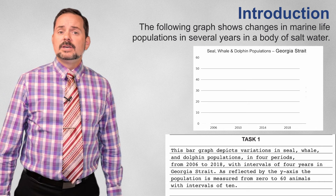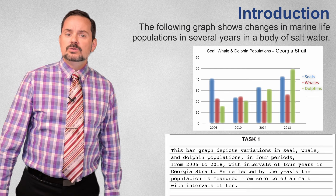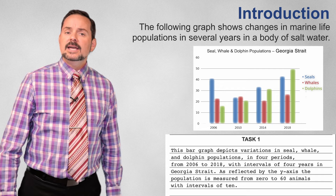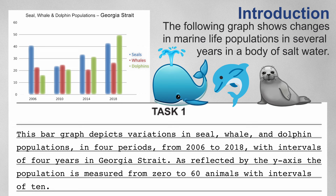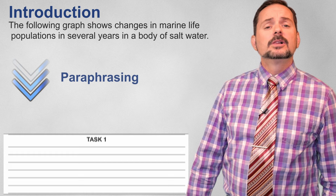Let's do this with this question. Take a look at the strong introduction using not only paraphrasing but additional details from the title, the legend, and the axes of this bar graph. This bar graph depicts variations in seal, whale, and dolphin populations in four periods, from 2006 to 2018 with intervals of four years in Georgia Strait.